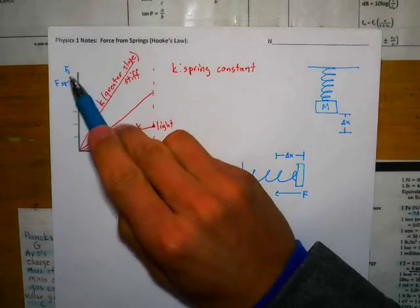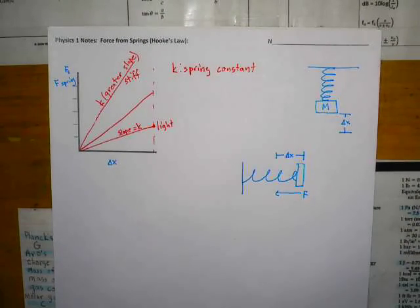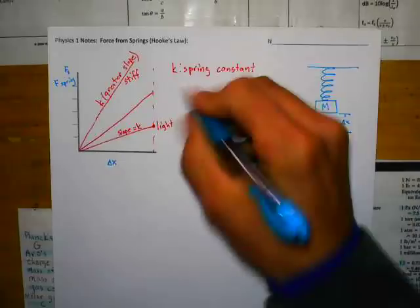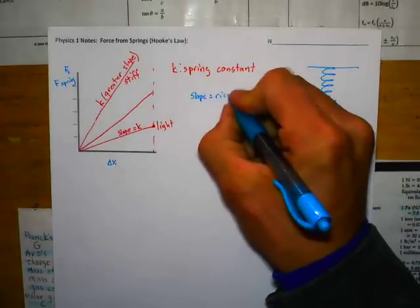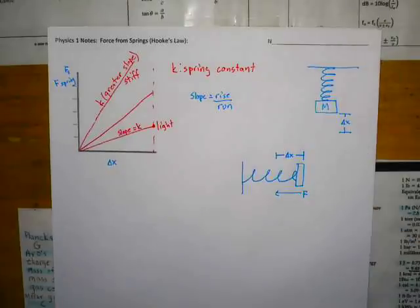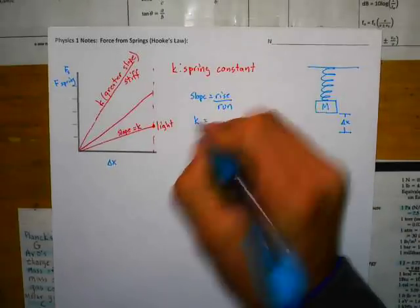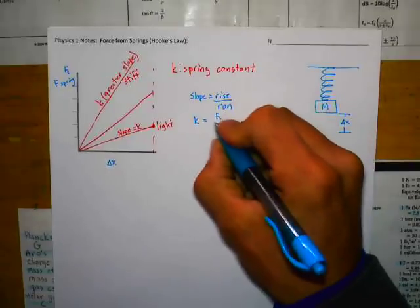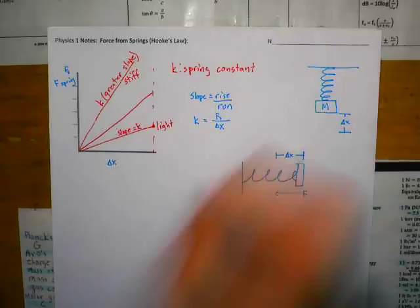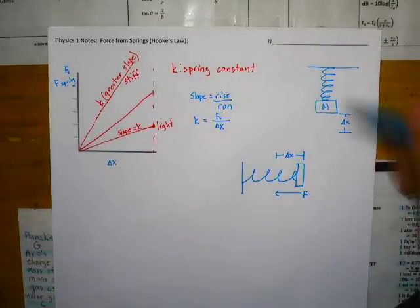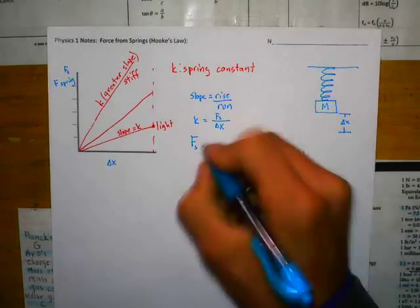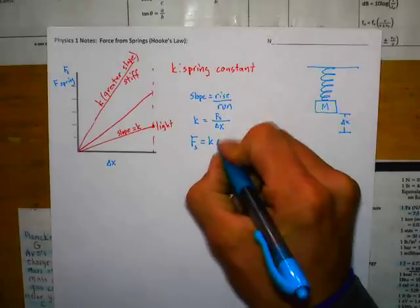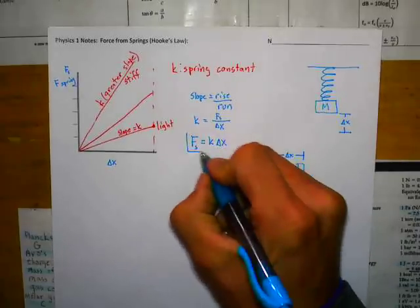If we take slope equals rise over run, my slope is K, rise is Fs, and run is delta x. So rearranging, Fs = K delta x. Delta x is the change in length of the spring, not the spring's length itself. This right here is called Hooke's Law.